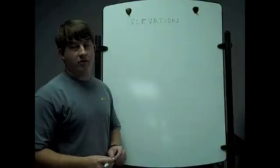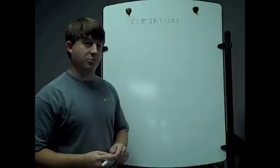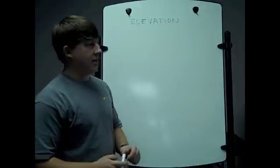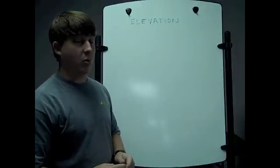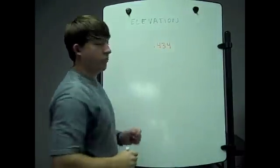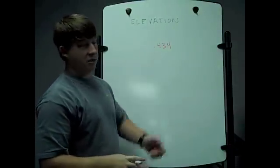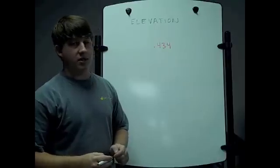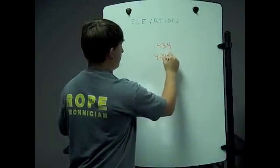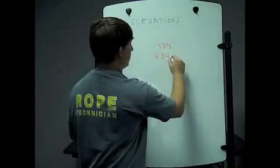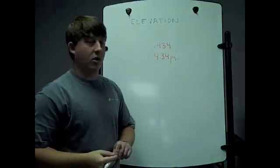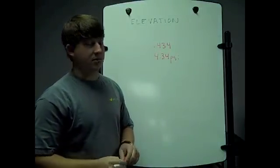Now let's talk about elevation, because it affects friction loss and pump discharge pressure. A column of water measuring one foot by one foot exerts pressure of 0.434 PSI per foot. For a 10-foot column of water, we multiply that times 10 to get 4.34 PSI. Typically for elevation gain or loss, we round that up to 5 PSI per 10 feet.